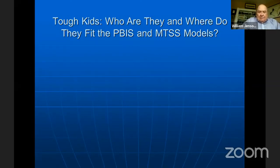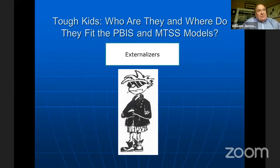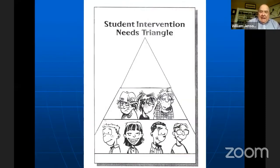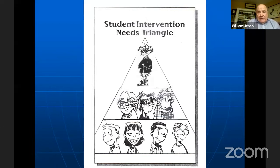How do Tough Kids fit into the PBIS/MTSS models? Tough Kids are externalizers — their behaviors affect individuals external to them: peers, parents, and teachers. They are not internalizers. These behaviors really stand out because they bother people. They are the 500-pound gorilla at the top of the PBIS triangle. PBIS is an incredible model, but I think its greatest challenge is right at the top with Tough Kids — and that's what this series is geared for.